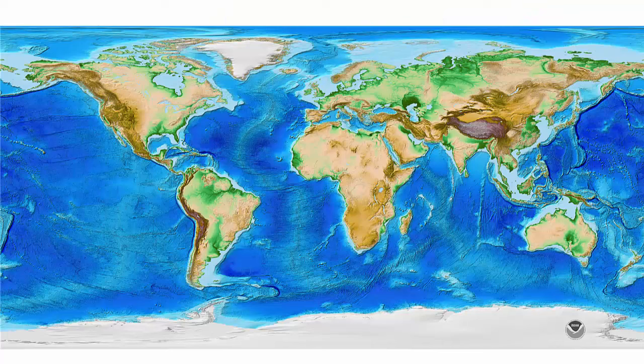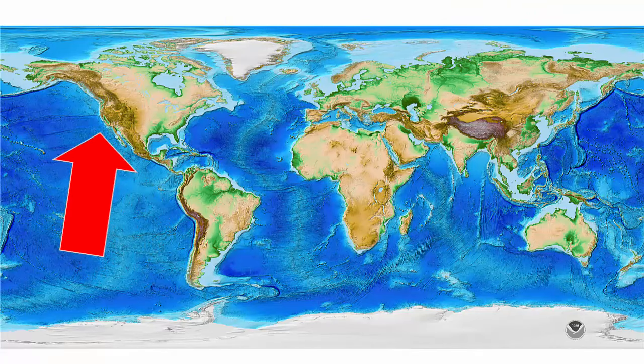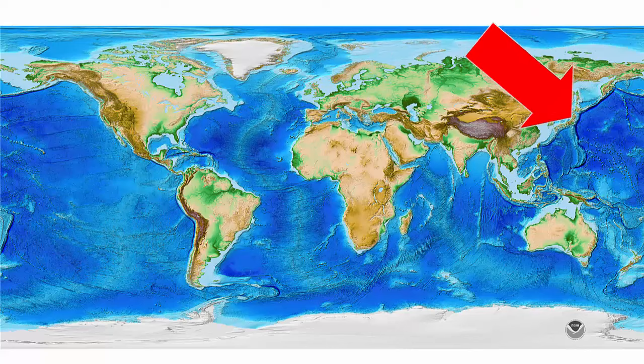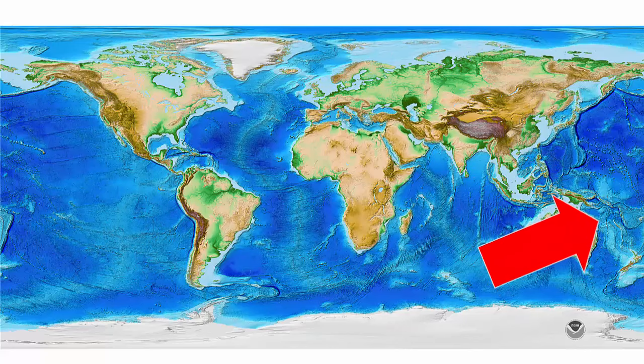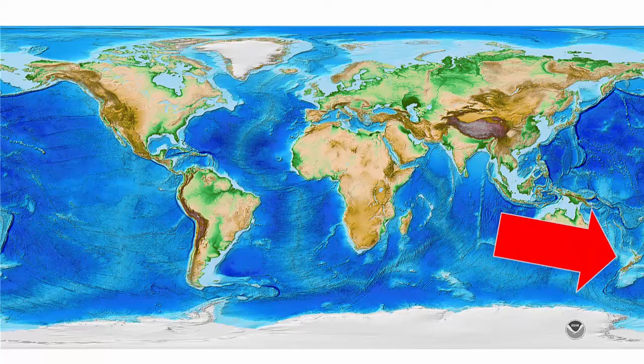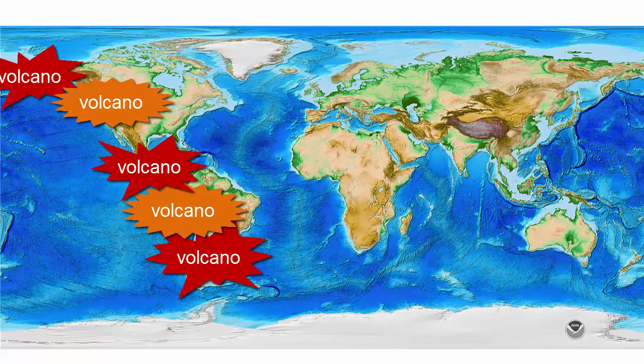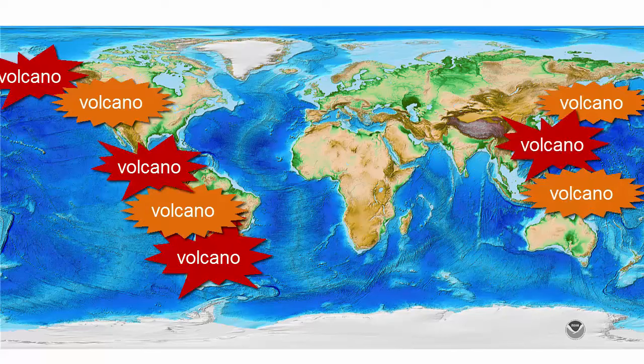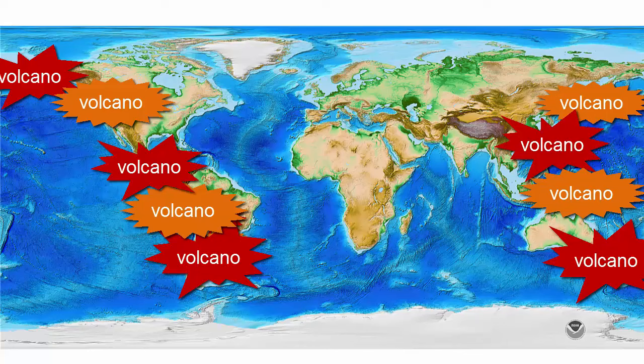If we continue around the Rim of Fire, we also see a number of ocean-ocean convergent plate boundaries in the western Pacific, most notably in Japan, the Philippines, and New Zealand. These areas are rocked by large earthquakes and explosive volcanic eruptions, making them very dynamic places to live.